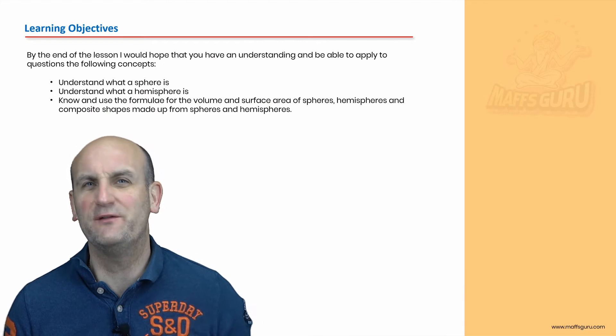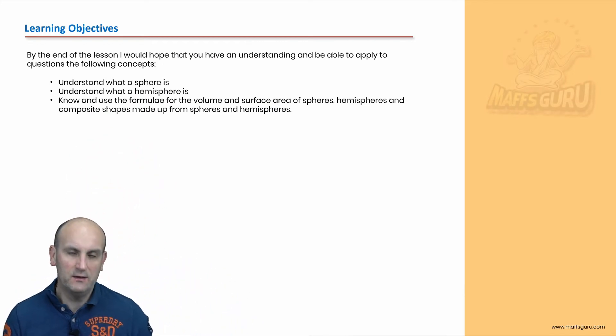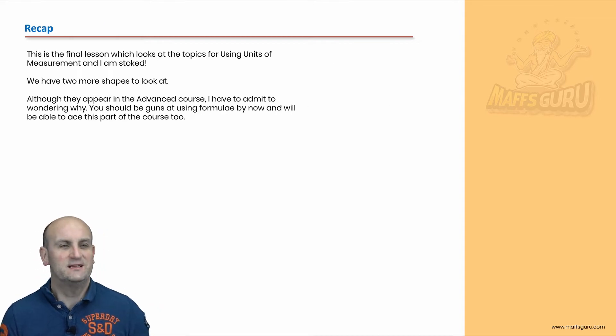So what are we doing today? Well understanding what a sphere is, understanding what a hemisphere is and knowing how to use the volume and surface area of spheres and hemispheres and composite shapes to answer all that funky maths. Now I know that sounds a bit weird but this is building on all the stuff that we have done in previous videos. So if you can understand how to use a formula, if you can understand how to use your CAS calculator to solve formulas, you should be a gun at this.